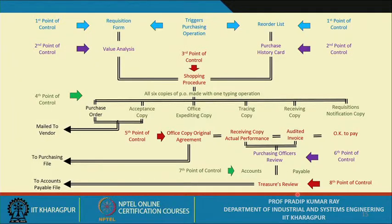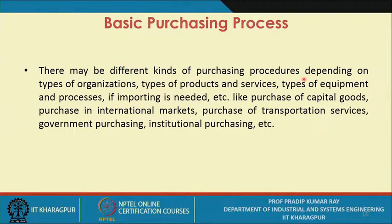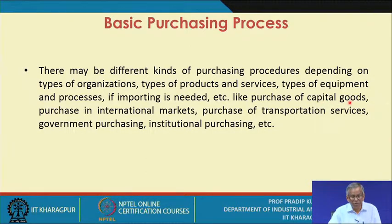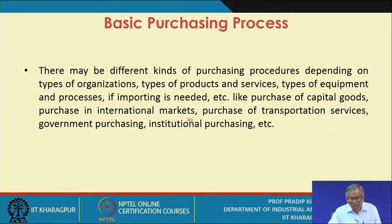This way you can represent the entire purchasing process. There may be different kinds of purchasing procedures depending on the types of organizations, types of products and services, types of equipment and processes, and whether importing is required. For many Indian organizations, for purchase of capital goods, importing is needed and you must know the import process and related terms like CIF and bill of lading. Other types include purchase in international markets, purchase of transportation services, government purchasing, and institutional purchasing.